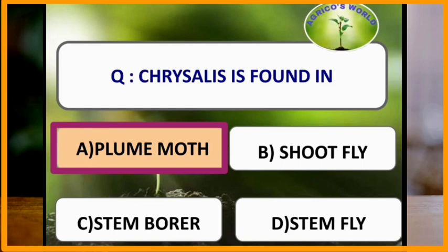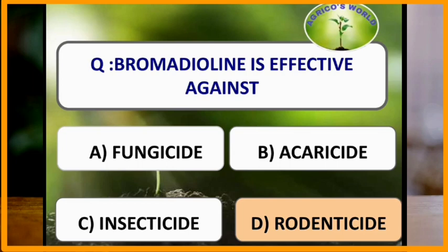Bromodiolin is effective against which of the following? Bromodiolin is an effective rodenticide.